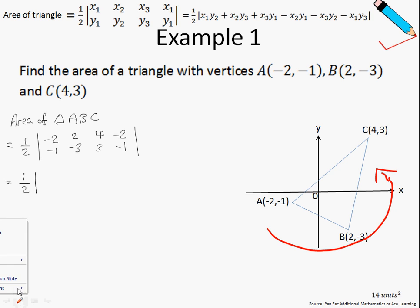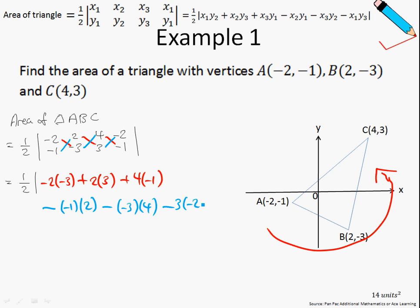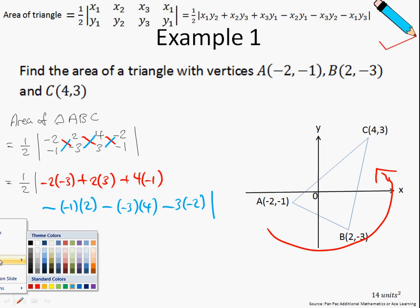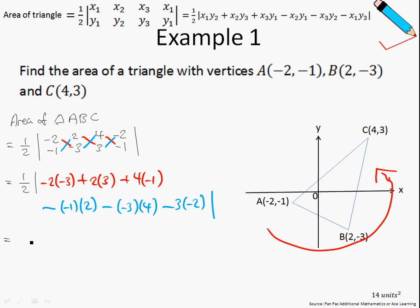Now, the next thing I will do, I will expand this out. So let me just use a colored pen to show you. It will be negative 2 times negative 3, plus 2 times 3, 2 times 3, plus 4 times negative 1. So let me switch colors. Minus negative 1 times 2, so negative 1 times 2, minus negative 3 times 4, minus 3 times negative 2, close modulus. The next part will just be simply pressing the calculator. And if I were to work this out, I would just end up with 14 units squared. So I hope that wasn't too difficult. If I was going too fast for some of you, please feel free to rewind and re-watch the video.